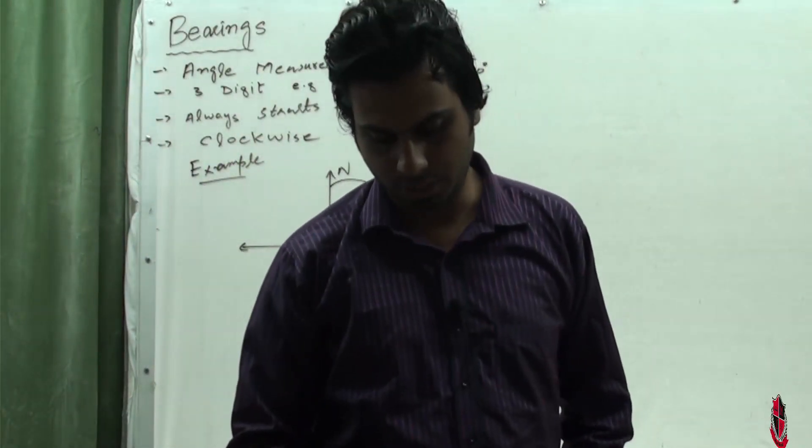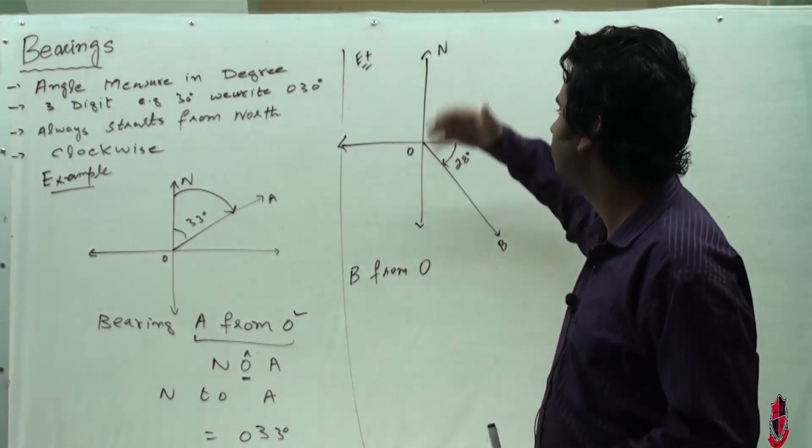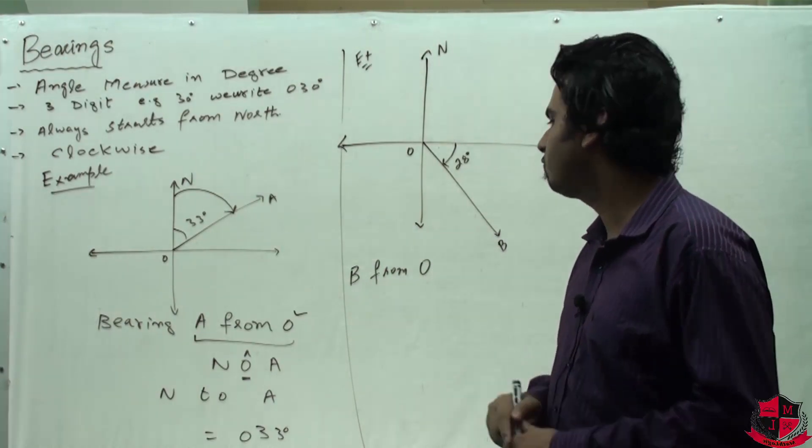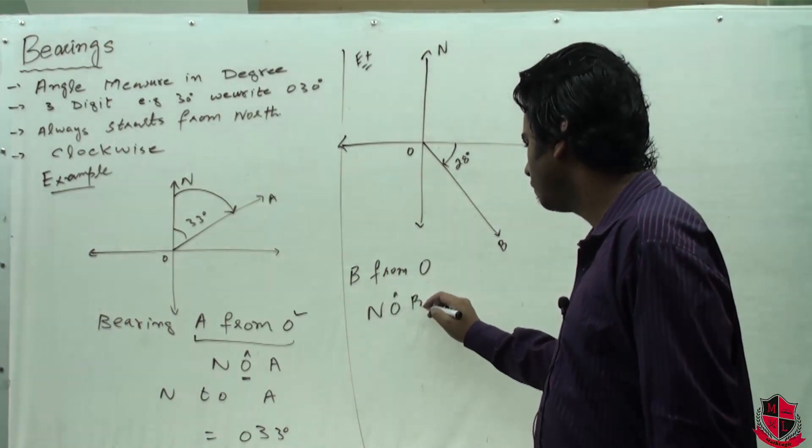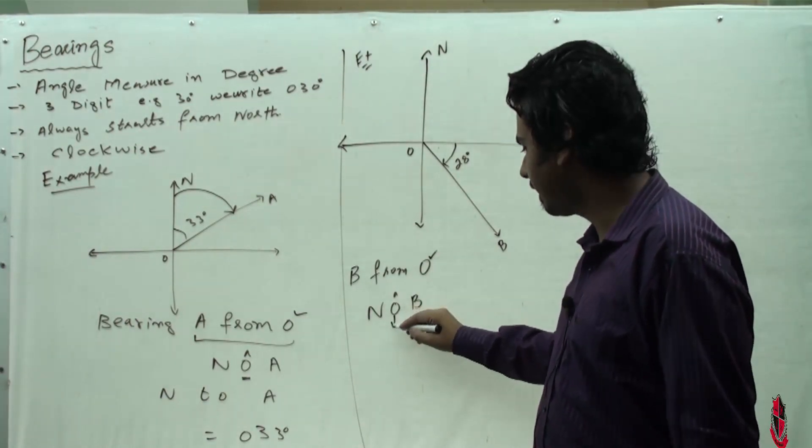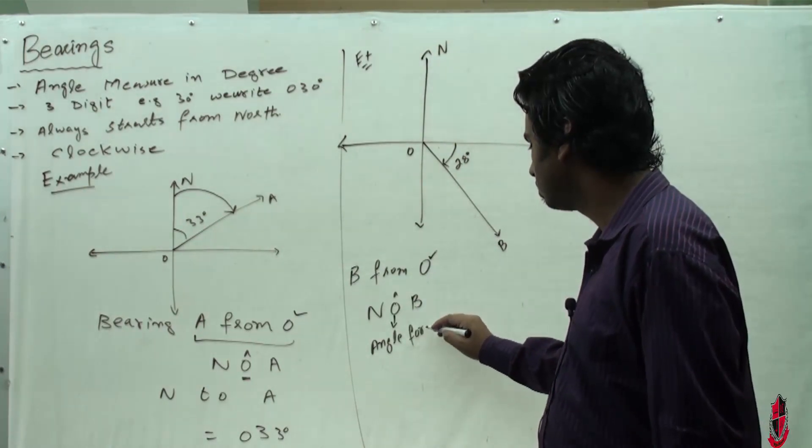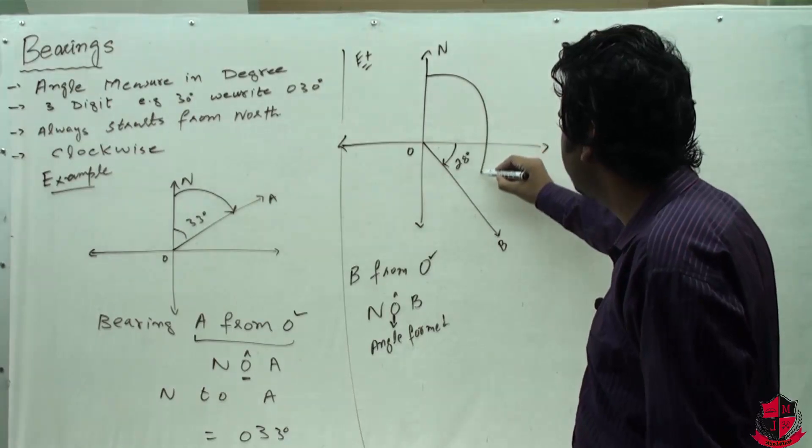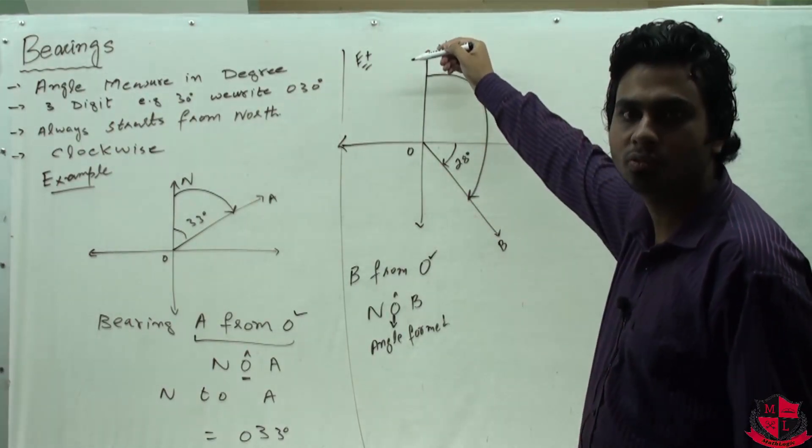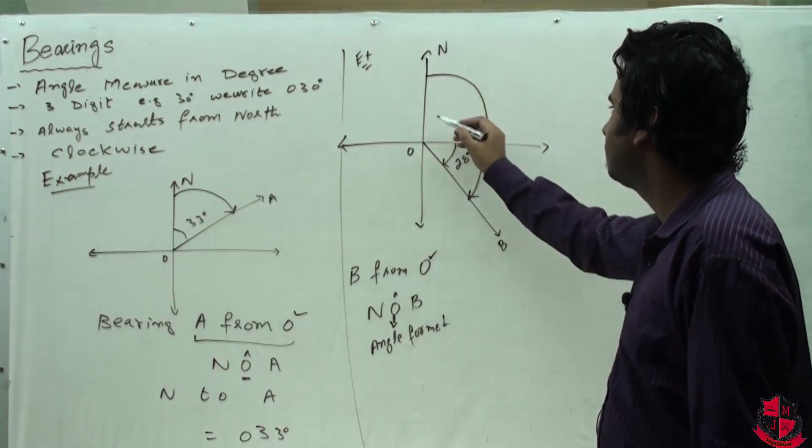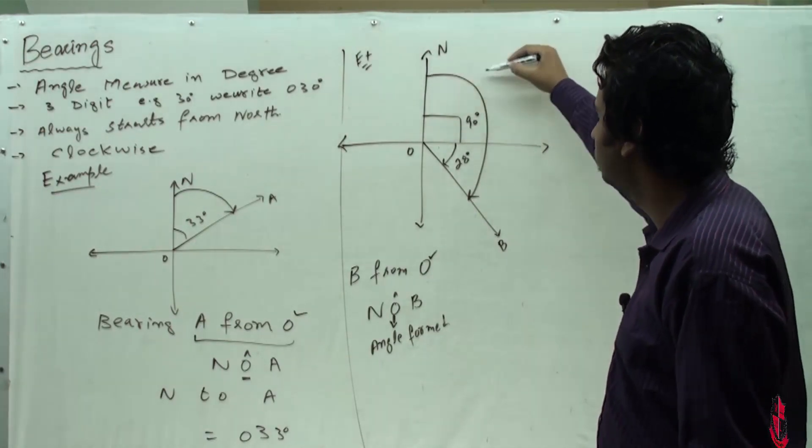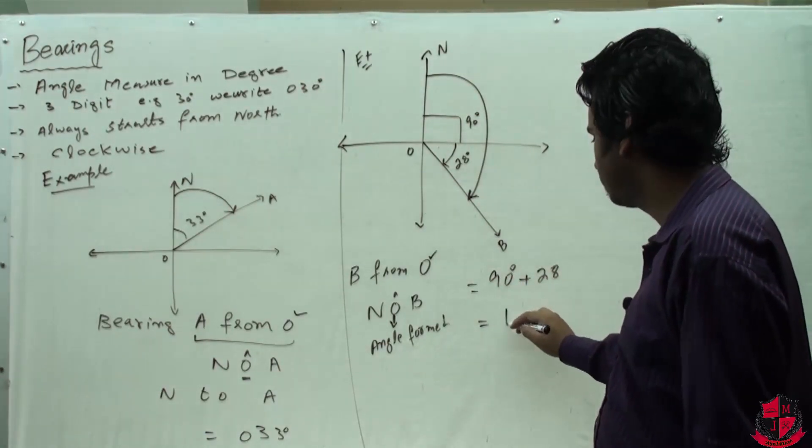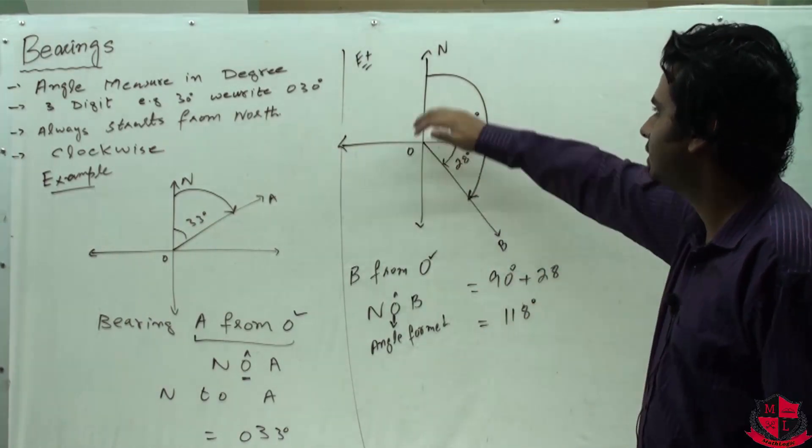Let's look at another example. We need to find bearing B from O. B from O means angle NOB - the word after 'from' is always between N and the other letter, and the angle is formed at O. We need to find this clockwise angle from N to B. In the Cartesian plane, we know this angle is 90 degrees to the east, and we add 28 degrees. 90 plus 28 equals 118 degrees. So bearing B from O, which starts from N and goes to B, is 118 degrees.